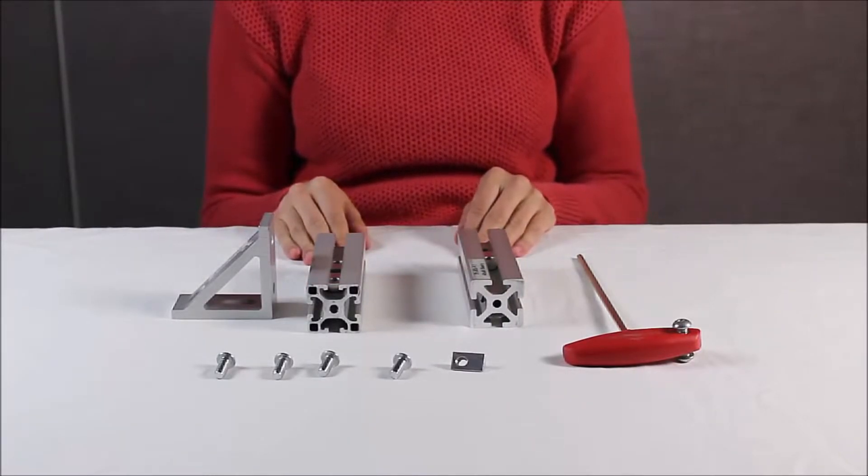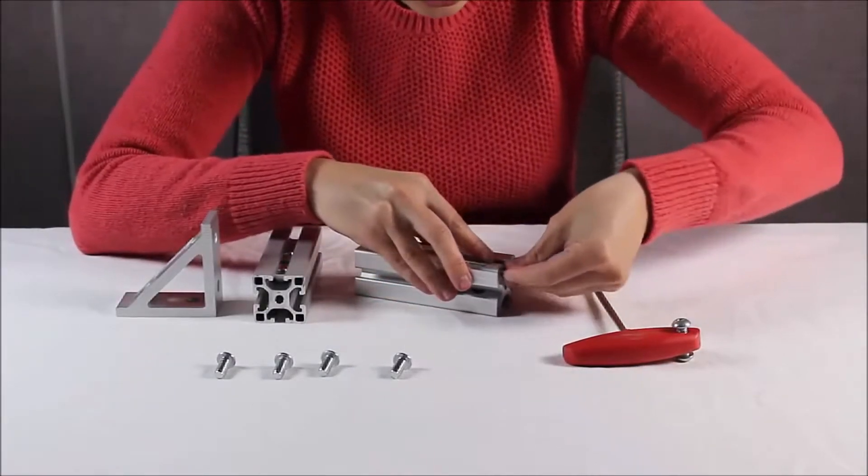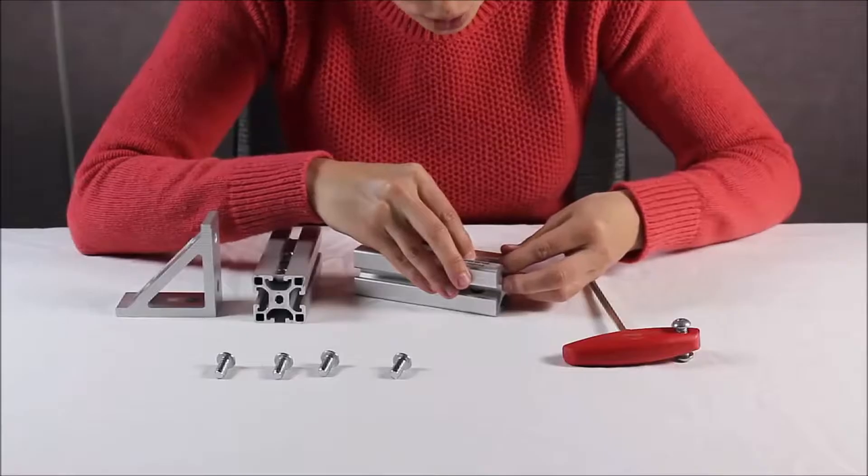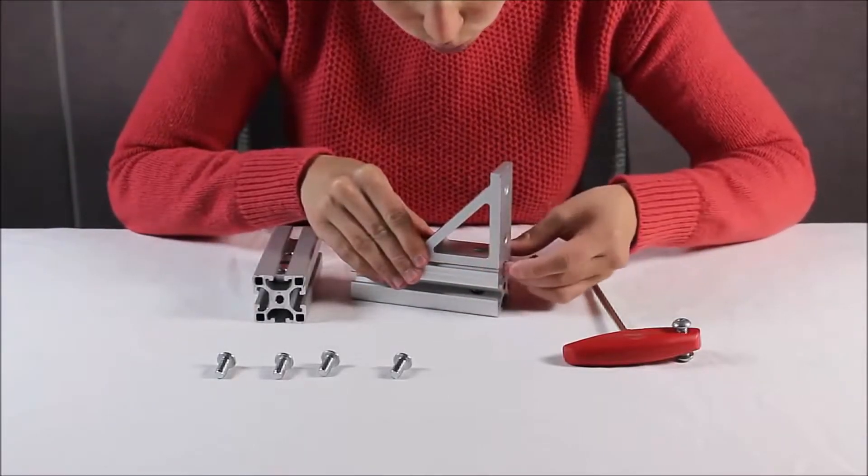The first thing we're going to do is take our T-nuts and slide them into the T-slot of the profile. You want the holes of the T-nut to align with the holes of the bracket, so you can use the gusset bracket as a template to align the holes.